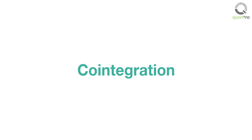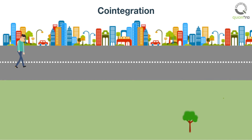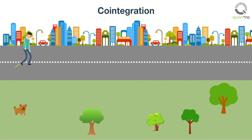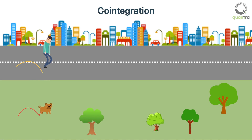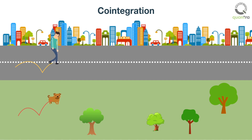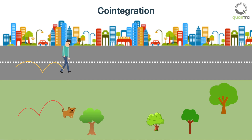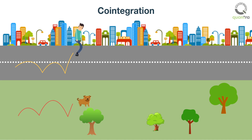To intuitively understand the concept of co-integration, consider this example of a drunk man walking with his unleashed pet dog. The drunkard and his dog are good examples of random walks, as both seem to be roaming around in a seemingly aimless manner. The paths of the drunk man and the dog can be referred to as non-stationary or random walks.